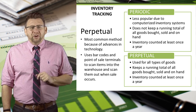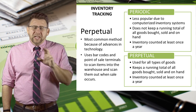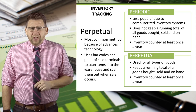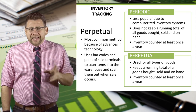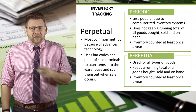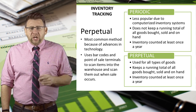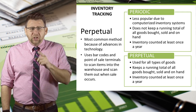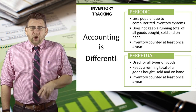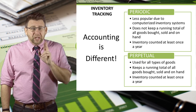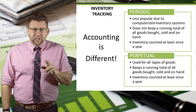The perpetual inventory tracking system is the most common method nowadays because of advances in technology. It uses barcodes and point-of-sale terminals to scan items into the warehouse and then scan them out when the sale occurs. Most of your retail shopping experiences use the perpetual method. Knowing which tracking system is being used is important because the accounting is different for each method — but more on that in future videos.